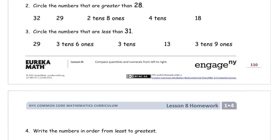Problem 2: Circle the numbers that are greater than 28. Well, 32, anything in the 30s is going to be greater than anything in the 20s. 29 is one more than 28. Two tens eight ones, that's the number 28, it's equal to 28. So I'm not going to circle it because I'm only circling ones that are greater than 28. Equal to, not good enough. Four tens is 40, that's more than 28. And 18 is ten less than 28, so it's less than. I'm not going to circle it.